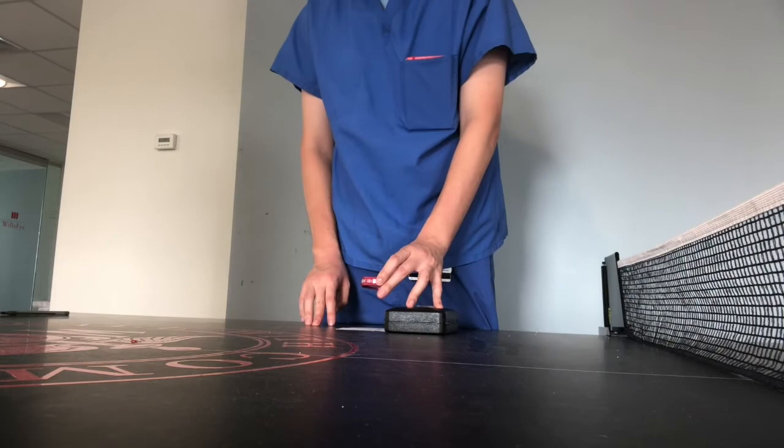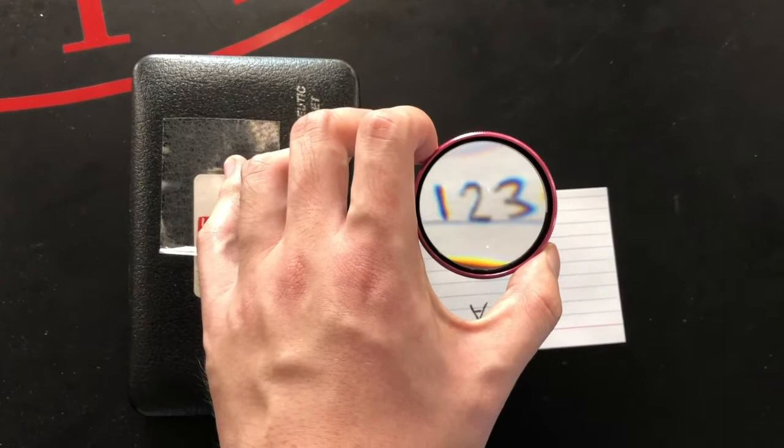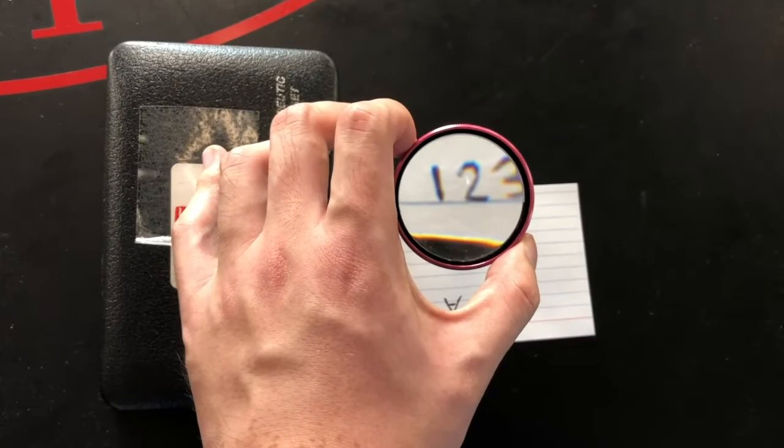This is another exercise where you can practice moving towards what you want to see. Here I have a series of numbers, and as I shift my body towards one side and the other, I am able to center different numbers.